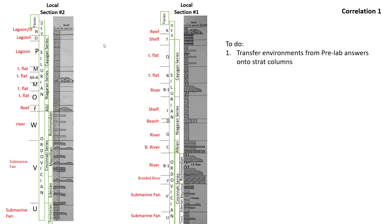I want to introduce you to the next couple of columns. The first column is the FACES, which you figured out in your pre-lab. The second column is the geologic period — in this case we're looking at the Ordovician, Silurian, and part of the Devonian period in areas around Virginia, West Virginia, Ohio, and Pennsylvania. These periods can be subdivided into series: the Ordovician into the Cincinnati series, and the Silurian into the Albion, Niagara, and Cayugan series. The Devonian isn't really subdivided in this area.